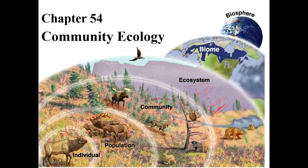A biome is just a really big ecosystem. We studied these in Chapter 42 — it would be stuff like a coniferous forest, tundra, taiga, grassland, that kind of thing. A biosphere — bio meaning life, sphere being the ball-shaped planet — is all of the areas of the planet where living things can exist: the land, the water, down into the soil as far as bacteria can live, up into the air for as far as anything can fly or float.